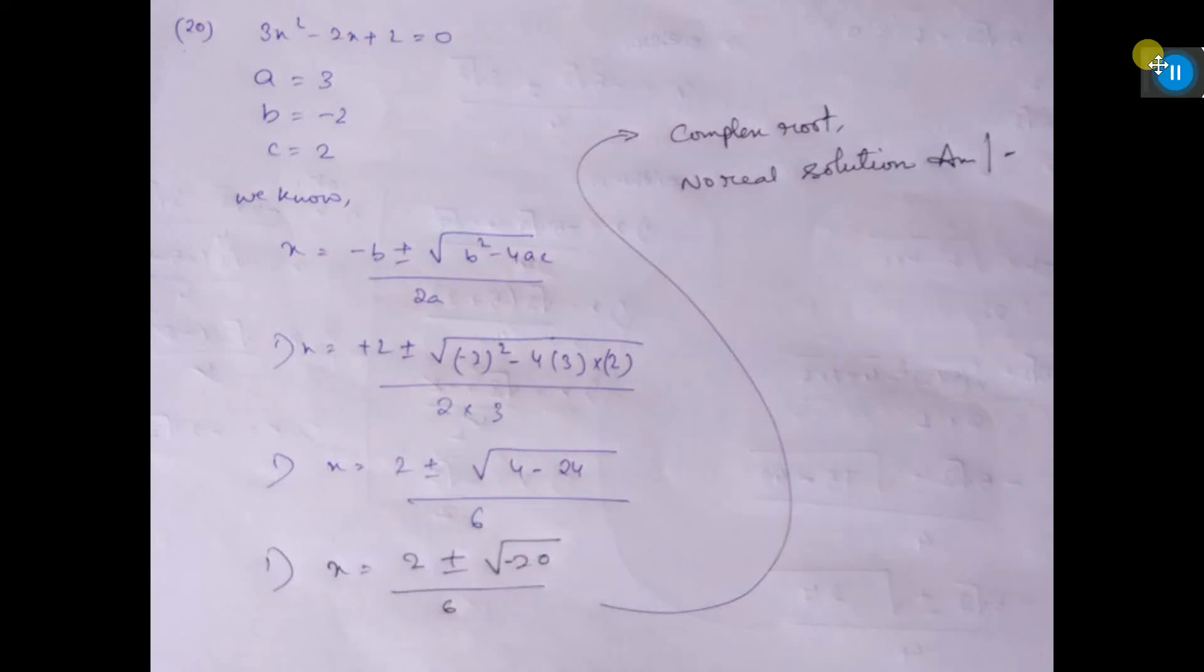In this question, it is given a is equal to 3, that is coefficient of x square. And coefficient of x is minus 2, that is the value of b. And c is constant term 2.